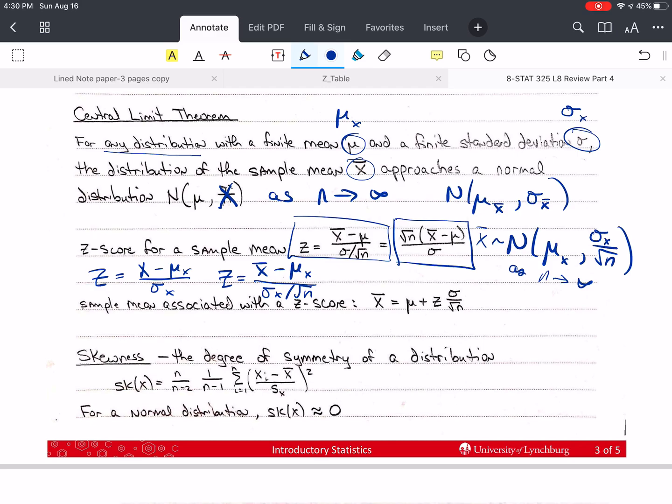The sample mean associated with the z-score, I've just solved this equation for x bar. By solving it for x bar, we end up with this equation. When we do problems where we have a sample, we have to use this modified version of the z-score and its solution for x bar.